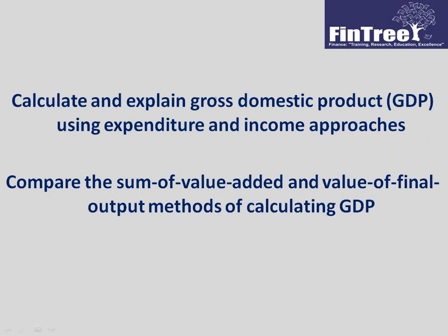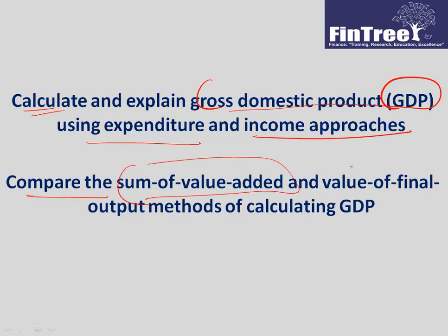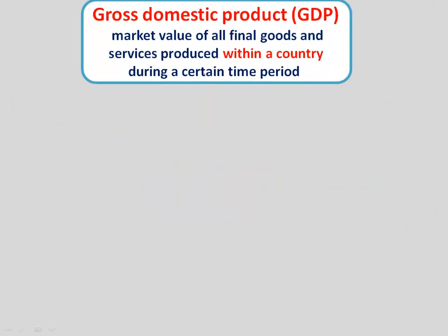The first two LOS are to calculate and explain GDP. Though the LOS says calculate, that's the job of a government, so you don't have to worry about that too much. You should know what the expenditure and income approaches are, and compare the sum of value added and value of final output methods for calculation of GDP. Starting from this reading, for the next three readings, you need to make notes and your studies should be based entirely on these notes.